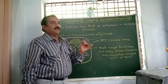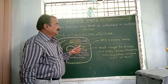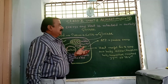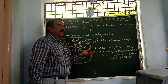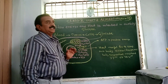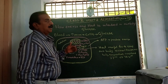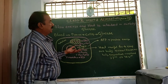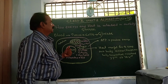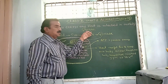Our bodies are always maintaining a constant temperature. We are also performing different types of activities daily, for which we need energy. Today we discuss how energy is released and how heat is released in your body. This comes from glucose.